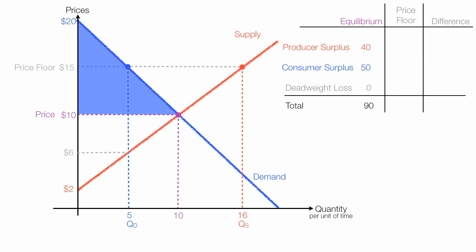Consumer surplus starts with this large area, and it shrinks to this new area. It's still the area below the demand curve and above price. The area of this smaller triangle is 1 half base times height, or 1 half times 5 times 5, and this equals 12.5. So consumer surplus after a price floor is 12.5, and it's gone down negative 37.5. And that 37.5 is this area right here.